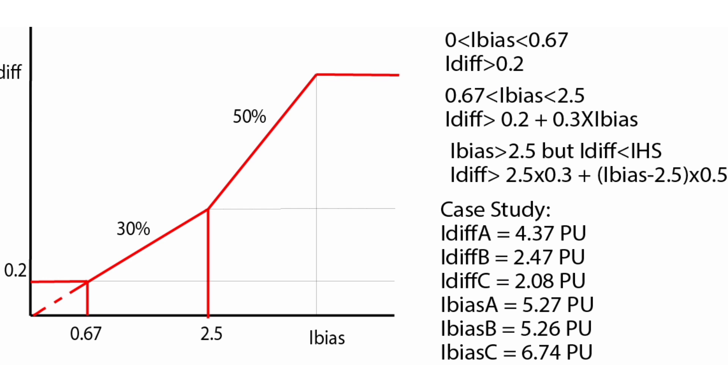The initial setting given for differential current is 0.2 per unit. Beyond that, a 30% slope starts, which meets the origin and continues up to 2.5 per unit of bias current. Beyond this bias current, a 50% slope for the higher region starts. This is the characteristics of the differential relay for the MICOM P648 relay.